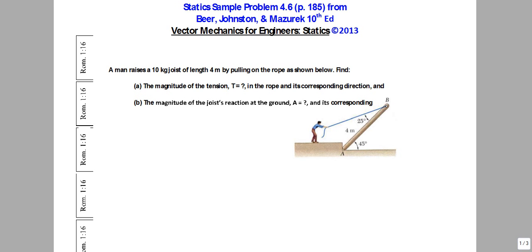Here's a little schematic of what we're talking about. You have a person who's trying to raise a joist of mass 10 kilograms and length 4 meters by pulling on that rope. We want to find the magnitudes of the tensile force in the rope as well as the built-up reaction at the ground where the joist is shown at point A, as well as the corresponding orientations of those forces.